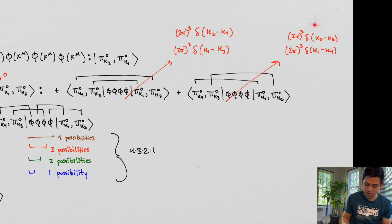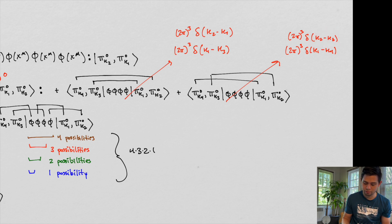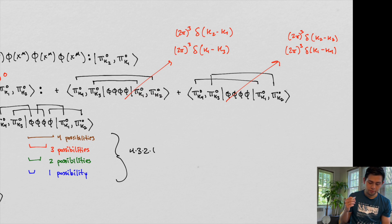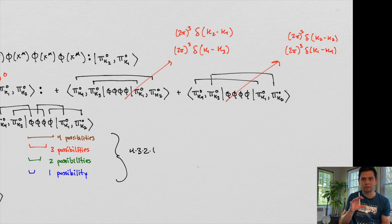These contractions go to zero because of what we established in the earlier video on important contractions. The incoming and outgoing momenta are not the same: K2 is not the same as K3, and K1 is not the same as K4. There is conservation of momentum, but each individual incoming particle's momentum is not equal to each individual outgoing particle's momentum — they differ across the black box interaction region.